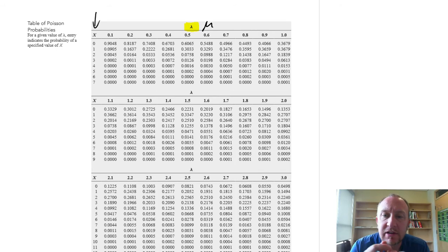So what we need to do first is find the distribution, or the variant of the distribution, that is relevant for our particular problem. Now, in this case, there's only one parameter that we need to concern ourselves with, and that's the mean.